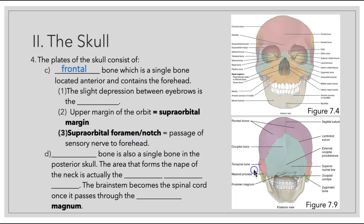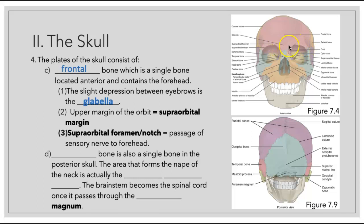Continuing on with the plates of the skull, we have our frontal bone anteriorly, which we call our forehead. The slight depression in the middle, found between our eyebrows, is called the glabella. The upper margin surrounding the superior aspect of the orbit is called our supraorbital margin. In this margin there may be either a hole or a notch, which we call the supraorbital foramen or notch — supra meaning above, orbital referring to our orbit — and this is here because we have passage of a sensory nerve to the forehead.